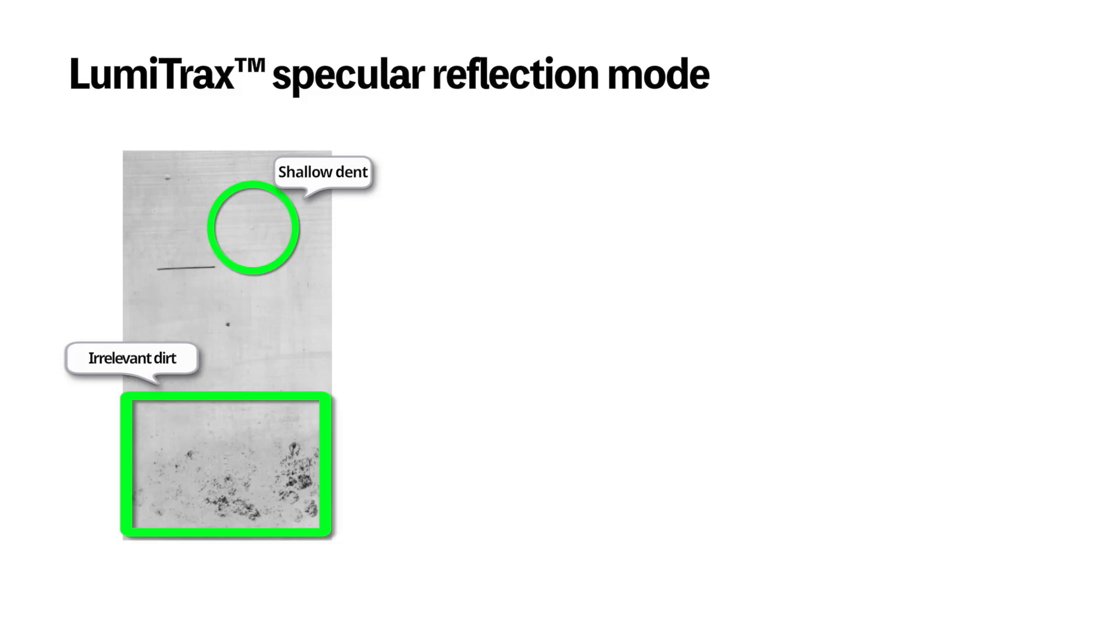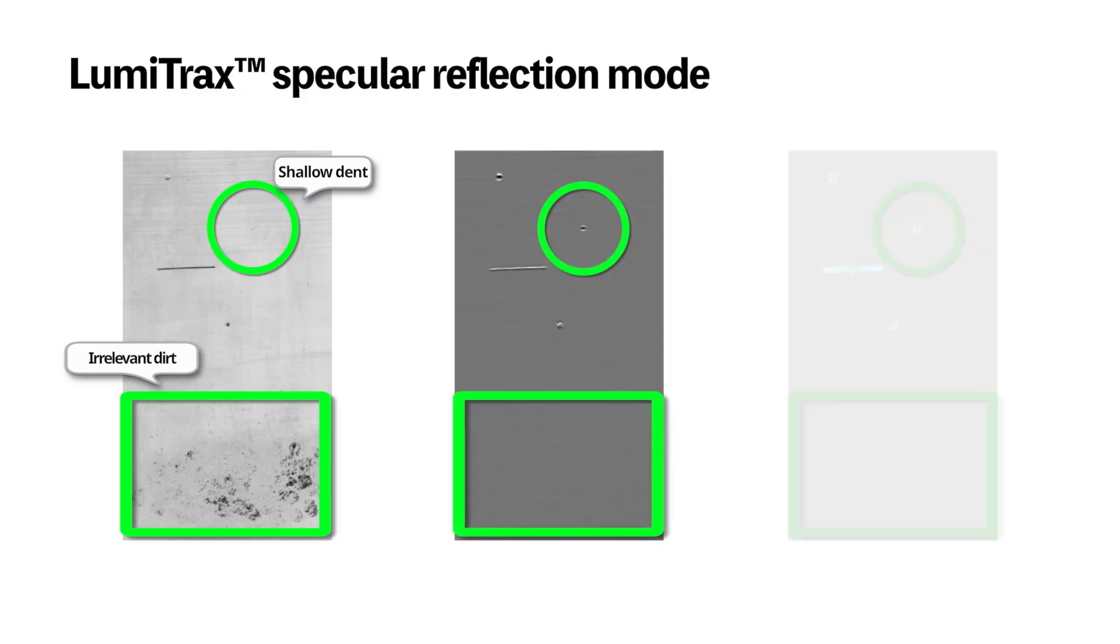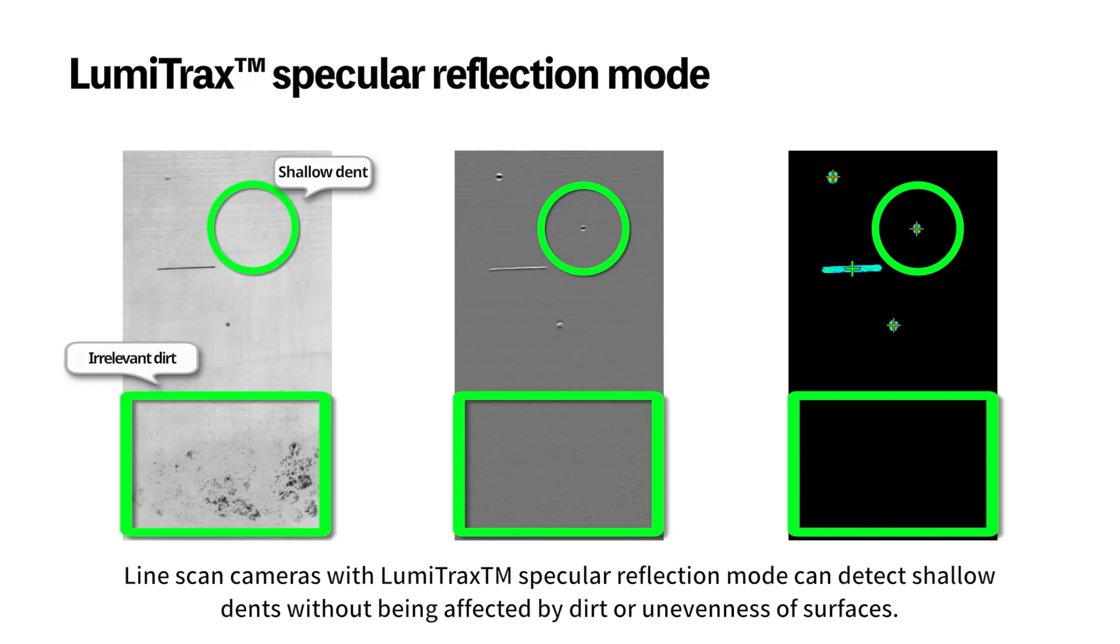Line scan cameras with Lumitrack Specular Reflection mode can detect shallow dents without being affected by dirt or unevenness of shading.